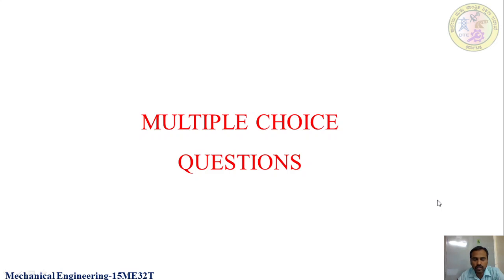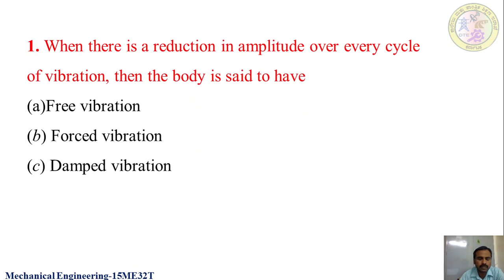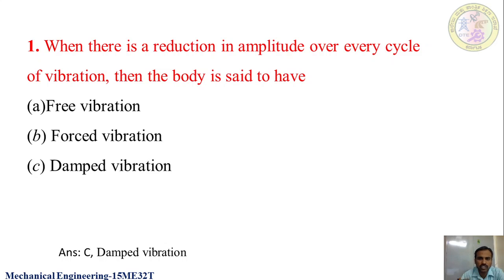Now let us see the multiple choice questions of this session. The first question: when there is a reduction in amplitude over every cycle of vibration, then the body is said to have — free vibration, forced vibration, or damped vibration? We have discussed this — the answer is damped vibration. If there is a reduction in amplitude over every cycle, that is said to be a damped vibration.